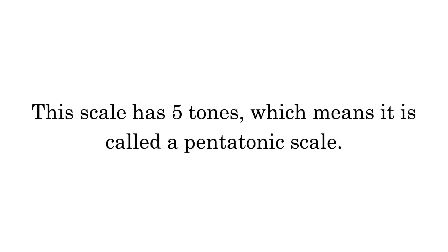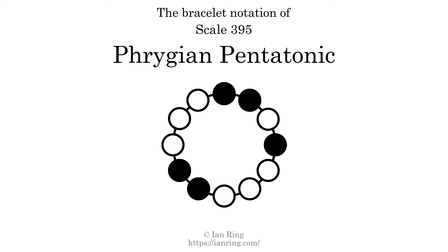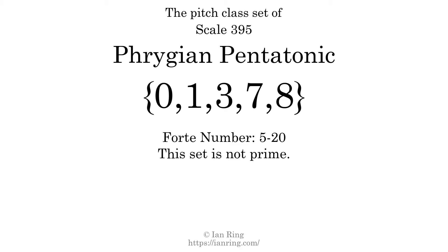This scale has five tones, which means it is called a pentatonic scale. This is a bracelet notation diagram of scale 395. The shaded circles represent tones that appear in the scale, and they are read clockwise, starting at the top. The pitch class set for this scale is 0, 1, 3, 7, 8.